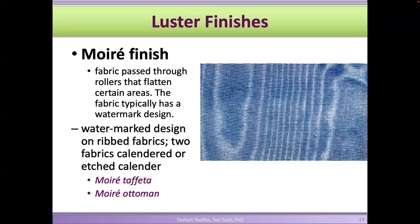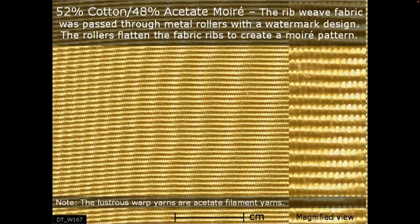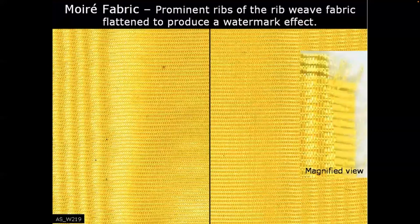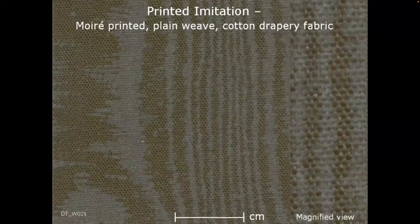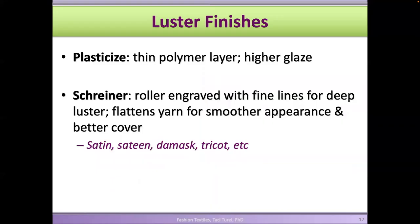Moiré finish is different — the fabric passes through rollers that flatten certain areas to create a watermark design. This is usually done on ribbed fabrics like ribbed faille, creating that distinctive watermark pattern. This is an acetate fabric with the moiré pattern. There is also an imitation moiré, which is a watermark print on the fabric surface rather than the actual finish. Other luster finishes include plasticizing and Schreiner finish — rollers engraved with fine lines for deeper luster, typically done on satin, damask, and tricot fabrics.